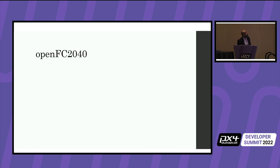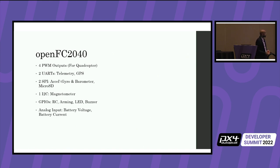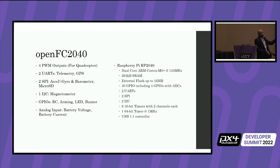Here's an example — the flight controller I designed, called OpenFC2040. My requirements were: four PWM outputs for a quadcopter, two UARTs for telemetry and GPS, two SPI for IMU and micro SD, one I2C port for magnetometer, and some GPIOs for LEDs, arming button, and buzzer. Based on these requirements I chose Raspberry Pi's RP2040. Comparing my requirements with the microcontroller's availability — I need two UARTs, it has two; two SPI, it has two; one I2C, it has two — it's a very close match.